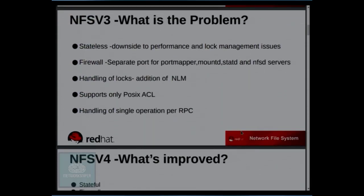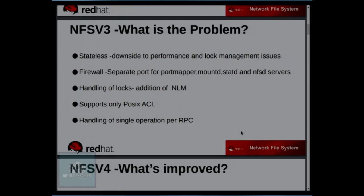So what's the problem with V3? The biggest problem is that it is a stateless protocol, whereas V4 is stateful. Stateless creates problems with performance degradation and locking issues. In NFS V3 we have firewall problems — different services float on different ports. We don't have a dedicated port for services like mountd, statd, and NLM, though PortMapper (port 111) and NFS (port 2049) are fixed. There's no integrated locking support; we use the NLM layer for that. Also, V3 only supports POSIX ACLs and operates one single operation per RPC call.